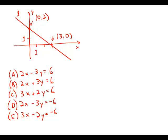So first of all I'm going to plug in this first point (3, 0). And so 2 times 3 minus 3 times 0, that gives 6, so it works for that point. 2 times 3 plus 0 equals 6, it works for that point. 3 times 3 is 9, that does not equal 6, so answer choice C is out.